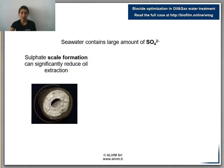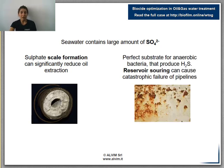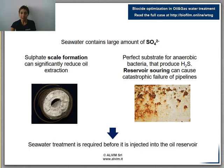Since in offshore production facilities water is taken directly from the sea, we have to consider the high concentration of sulfate ions that can result in scale formation. In the production well, scale deposits may significantly reduce oil extraction. In addition, it promotes the development of anaerobic bacteria that produce hydrogen sulfide. This gas generates sour fluids, very dangerous for metal structures. That's why it's necessary to apply a treatment to seawater.